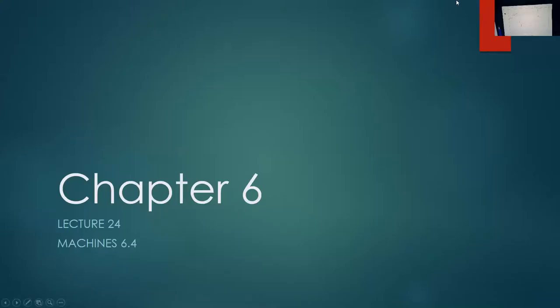This is lecture 24, chapter 6. This will be the final lecture for chapter 6 and it deals with machines. Up to this point we've talked about trusses and frames, and the last category is machines. Machines use all the basic calculations and formulas we've used up to this point — they're just a slightly different application of what we already know.